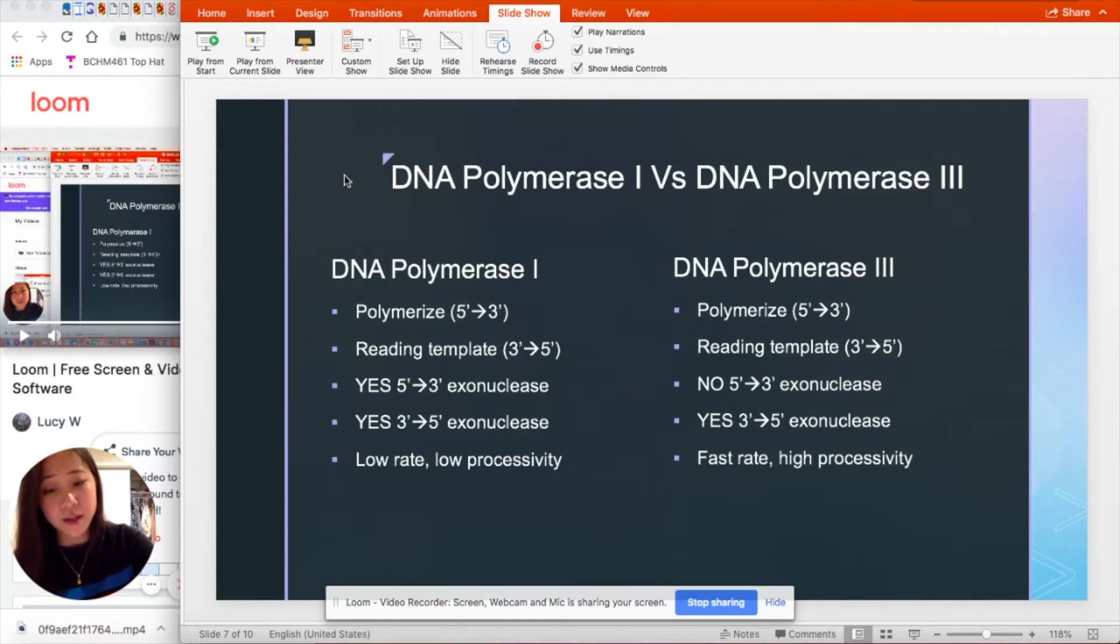And three prime to five prime exonuclease activity allows for the polymerase to go backwards and chew away DNA that was newly synthesized. And it serves as an editing or proofreading mechanism that removes incorrectly paired nucleotides.